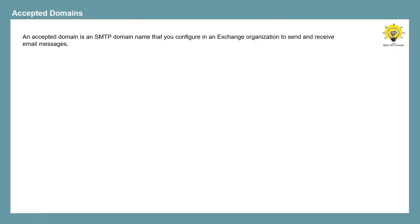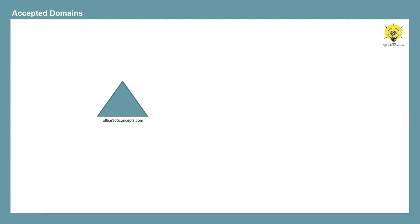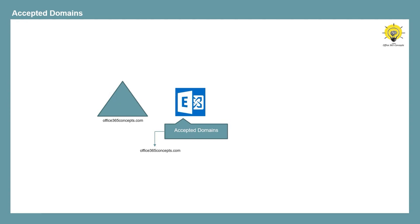An accepted domain is an SMTP domain name or SMTP namespace that you configure in an on-premise Exchange organization to send and receive emails. When you set up a domain controller in your on-premise environment and promote that server to a domain controller, you mention a domain name for your new forest. When you install Exchange Server, that forest domain name is added under accepted domains. You can assign this domain as a domain suffix for email addresses for users, groups, public folders, or any other mail-enabled recipients.